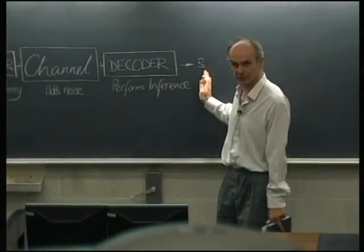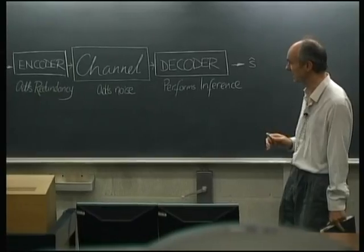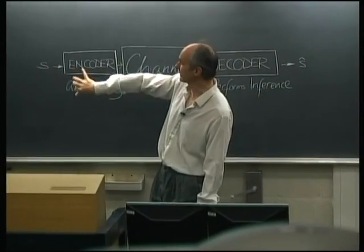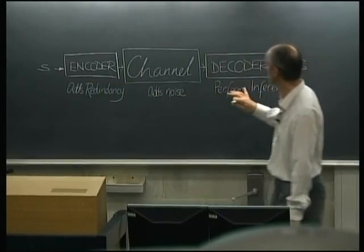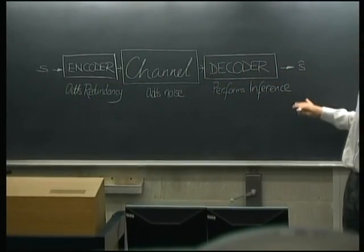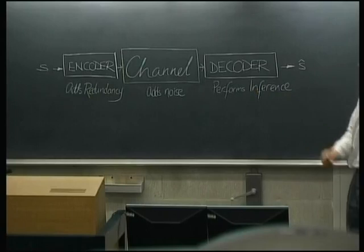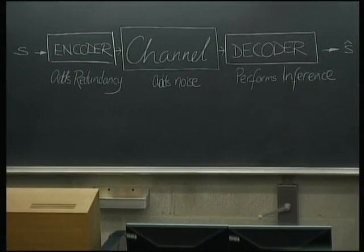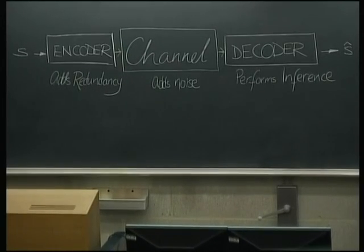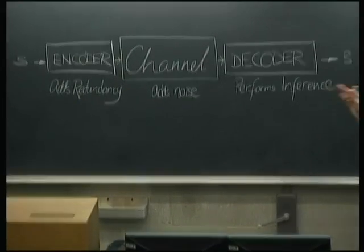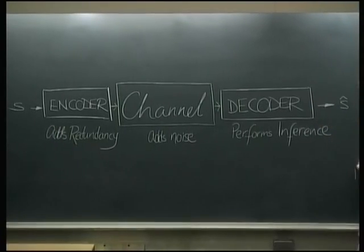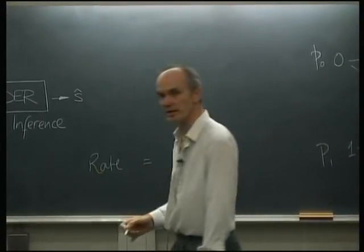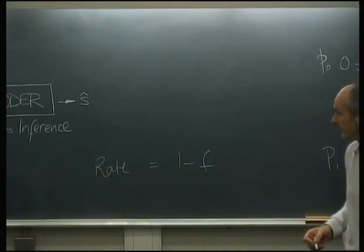Now I want to go back to the noisy channel coding diagram. Everything we talked about said: imagine a noisy channel, slap a clever encoder on the front that adds redundancy, and a clever decoder that does inference to recover the input. We solved the noisy channel coding theorem, and for the binary erasure channel the answer is you can communicate at a rate 1 minus f with essentially zero errors — that's achievable.